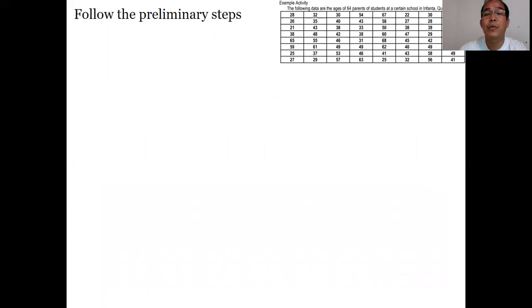Let's have step number 1. Determine the appropriate number of classes. How? 1 plus 3.322 log of n. Our n this time is 64. So you may use your calculator or your cell phone. In your calculator, if it is a scientific calculator, all you have to do is press 1 plus 3.322 log of 64 then equals. The result would be 7. Copy this for step number 1 to two decimal places.